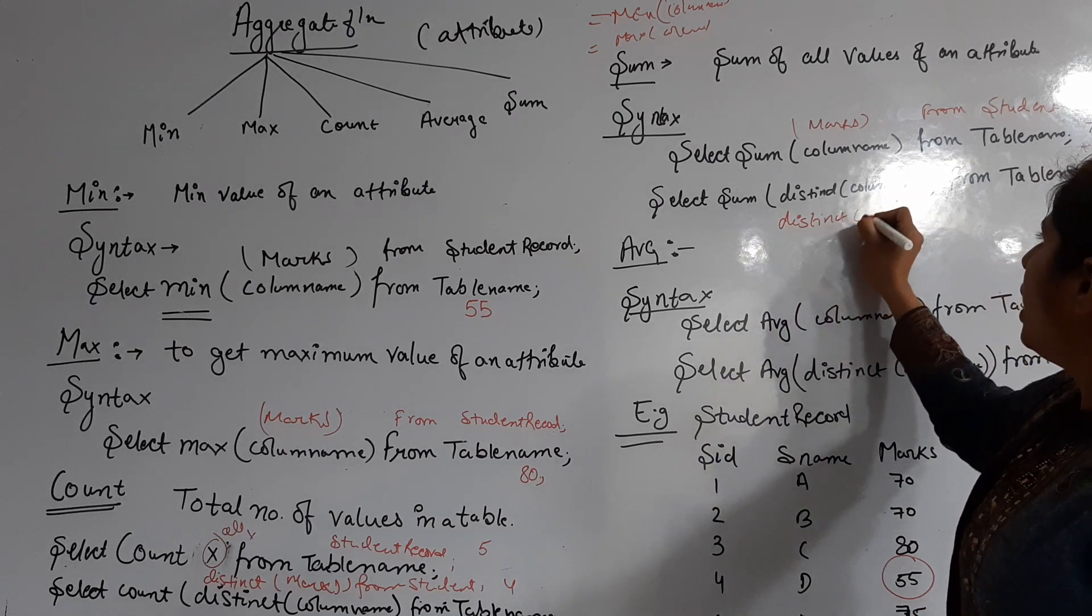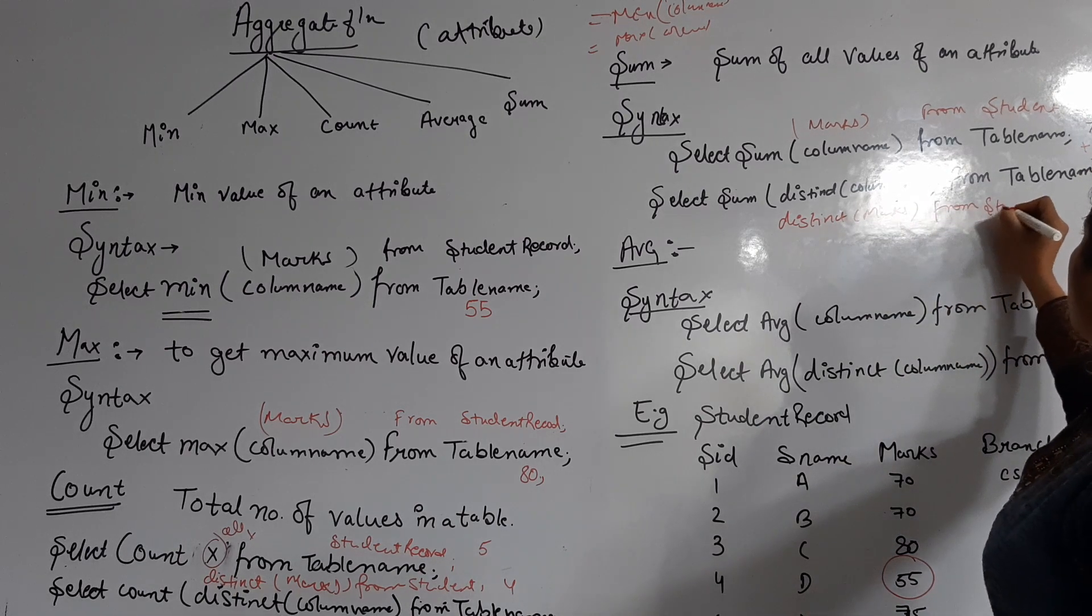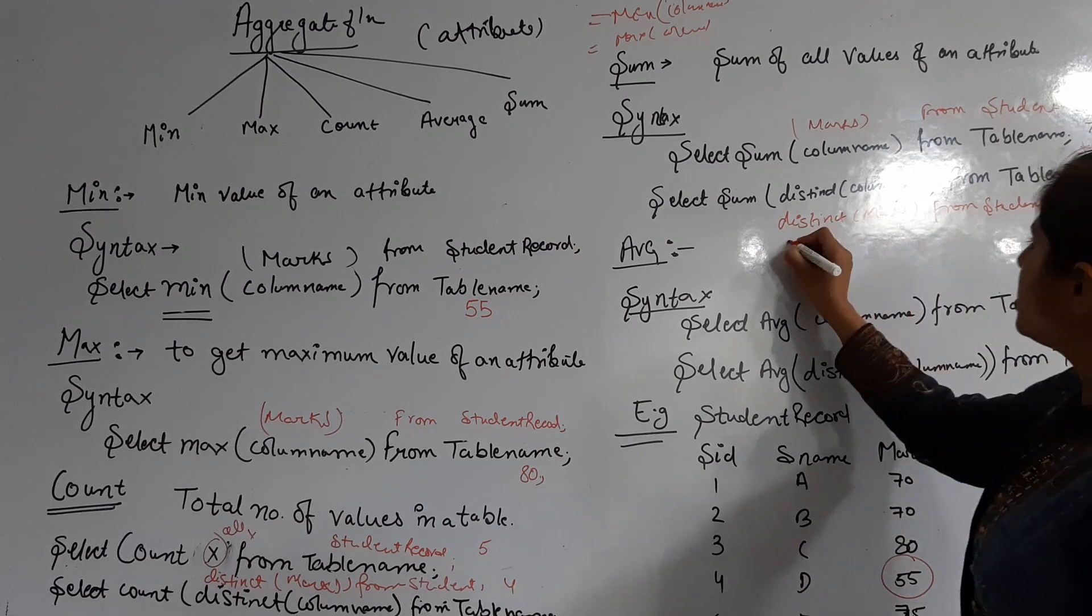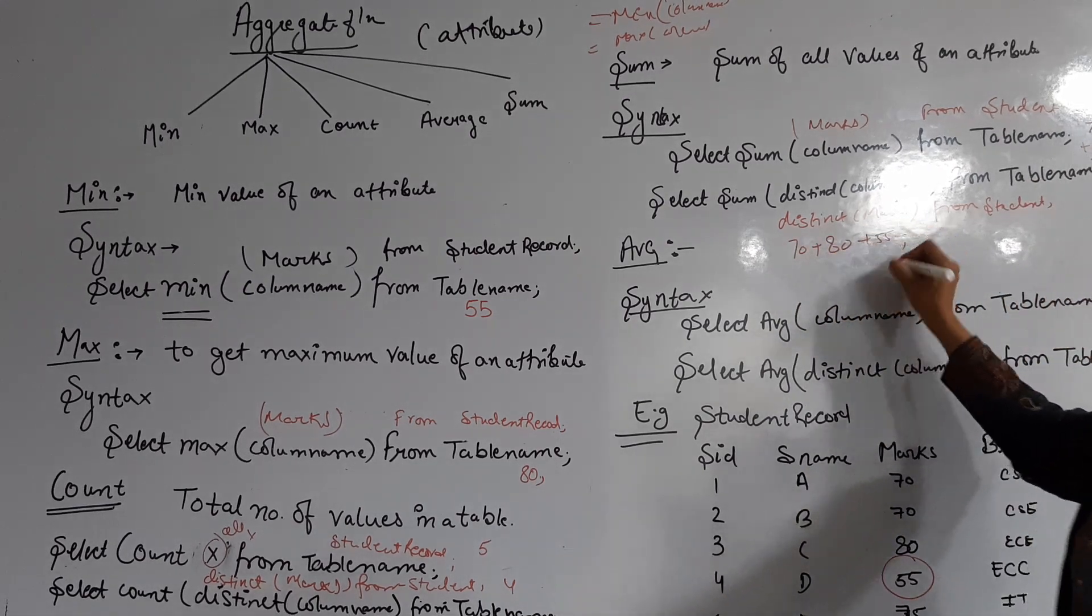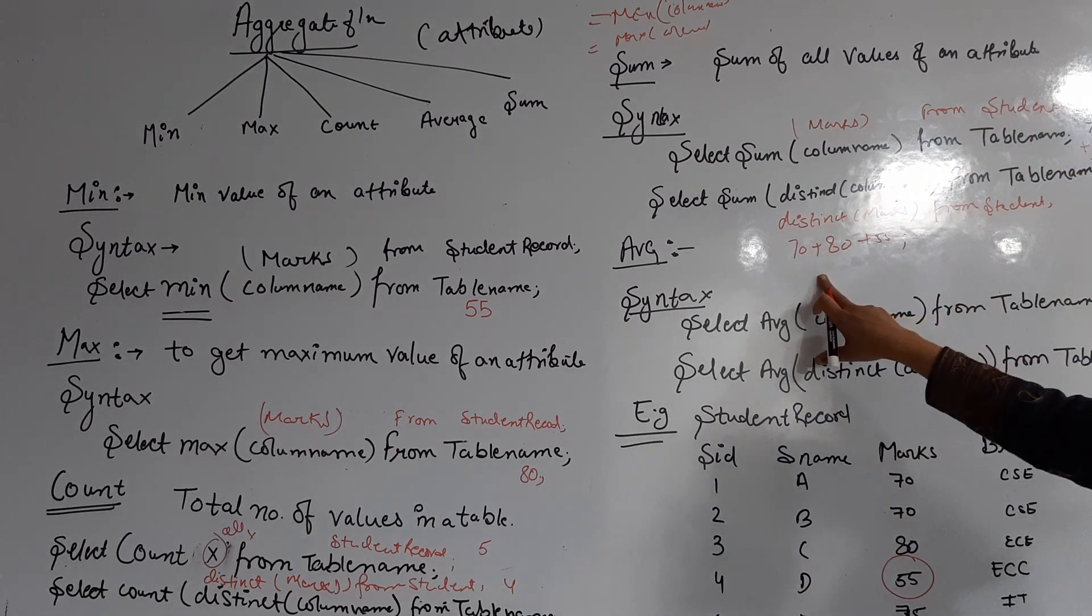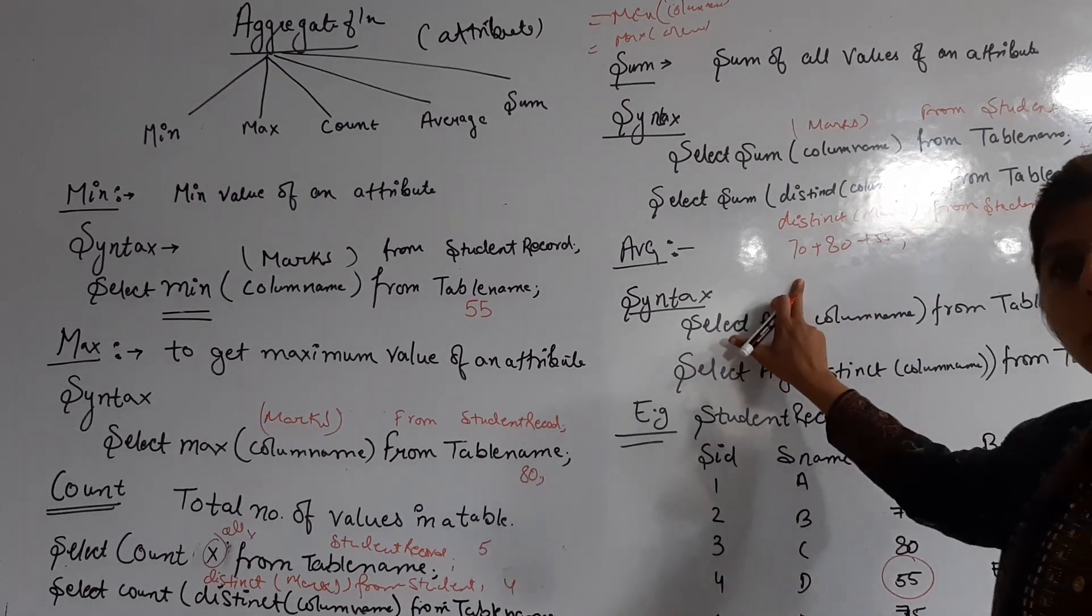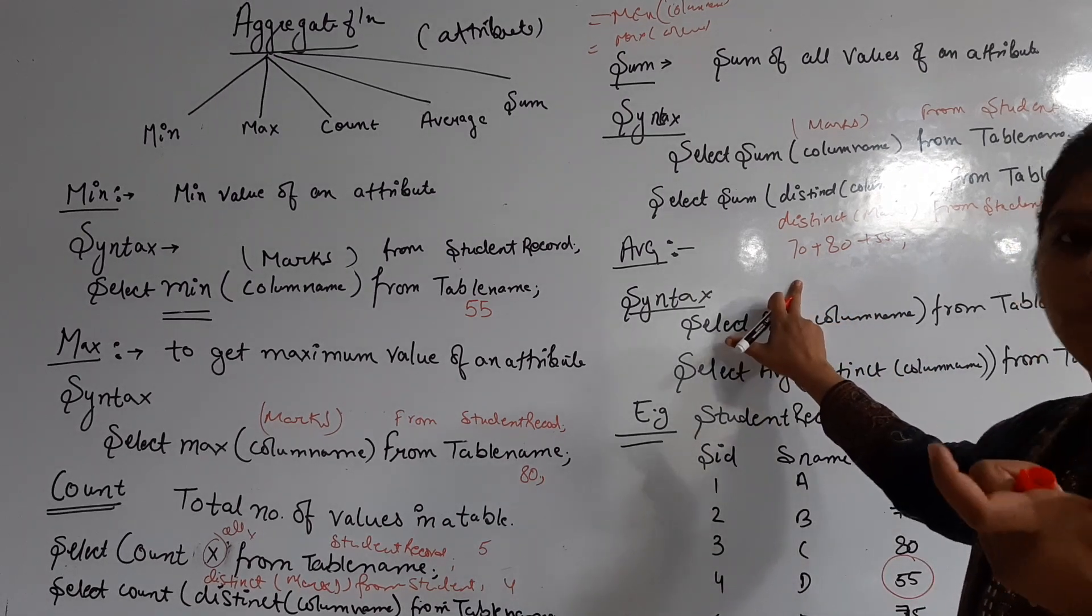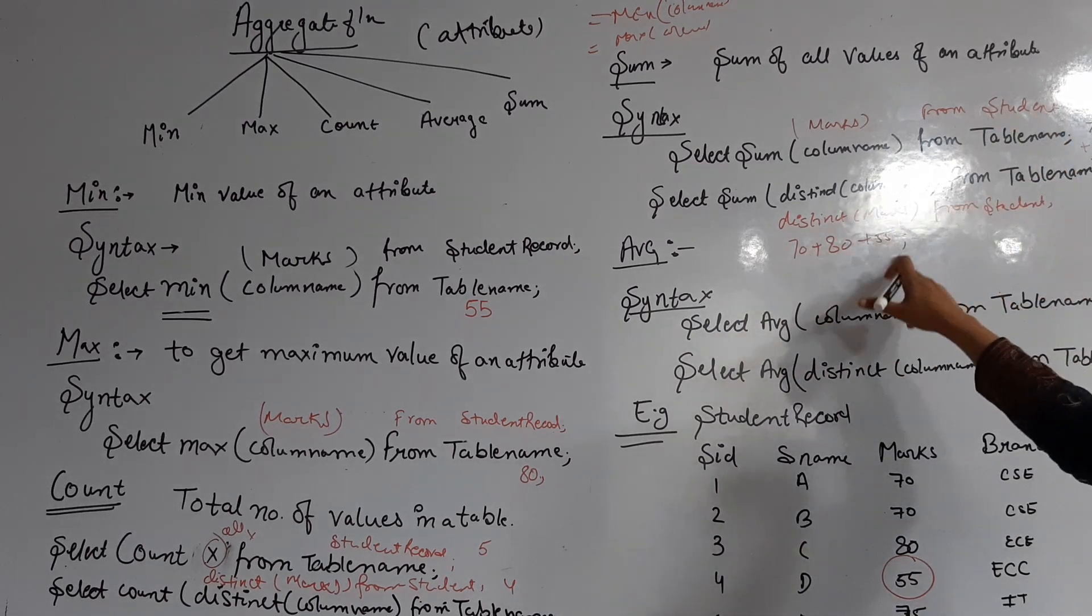If I use SELECT SUM(DISTINCT marks) FROM student_record, DISTINCT means 70 plus 80 plus 55 plus 75, removing the duplicate 70.